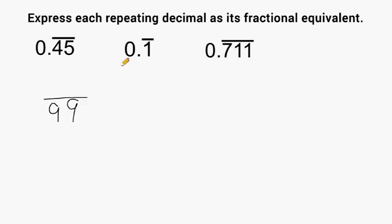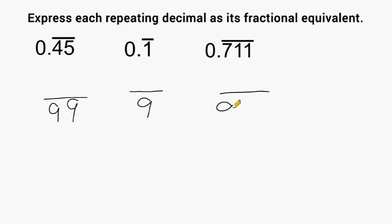Now for this one right here, we have one digit that is repeating, so we write a single nine. And for this pattern right here, we have one, two, three digits underneath the line, so we're going to write three nines. What we do next is we take what is written under the line — in this case a four and a five — and write that as our numerator.